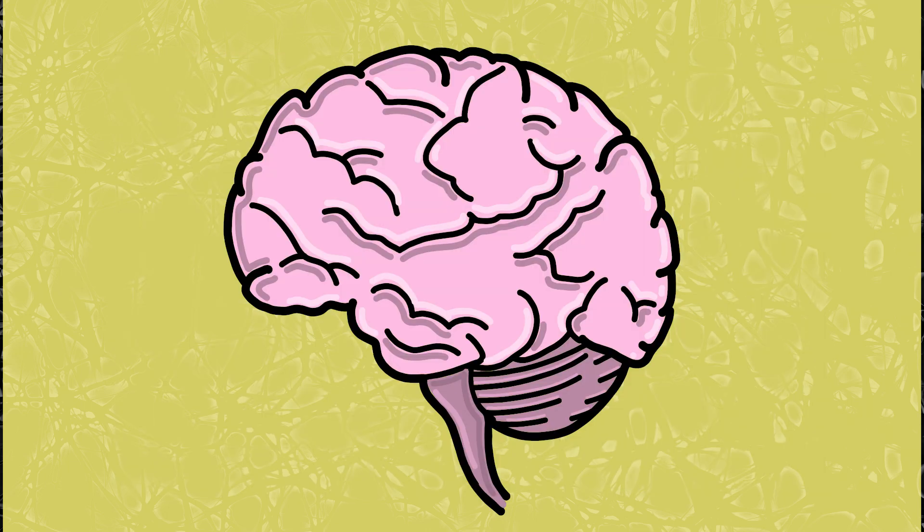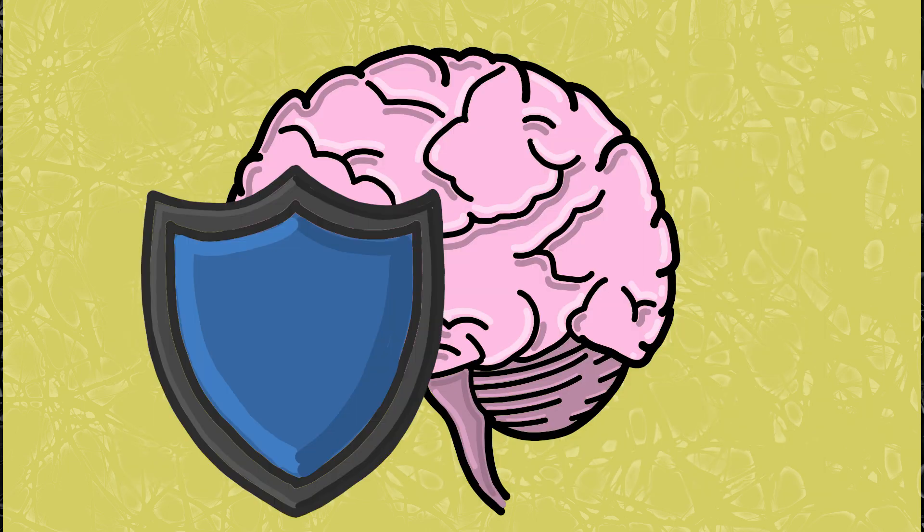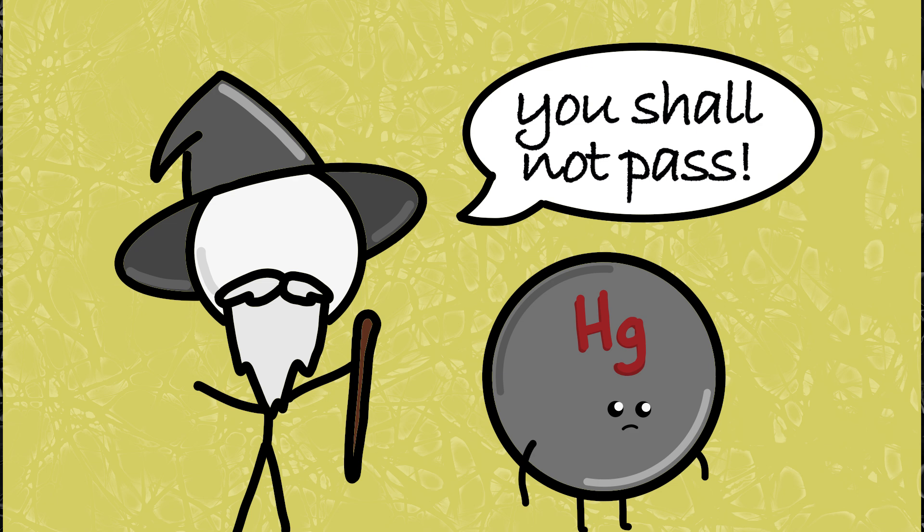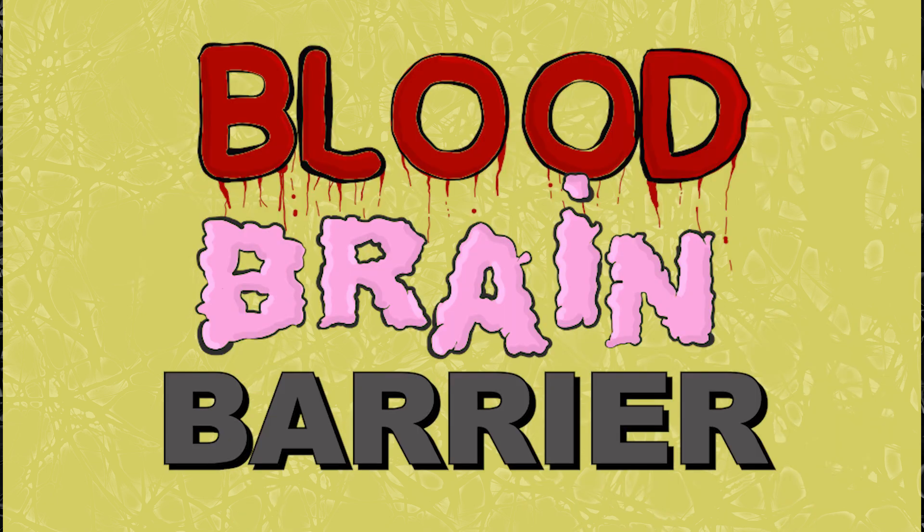Your brain is pretty important. In order to protect it, the body has a system for keeping bad stuff out and letting good stuff in. This is called the blood-brain barrier.